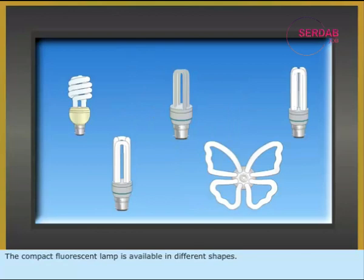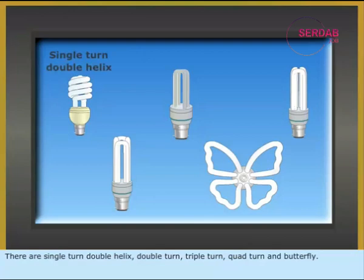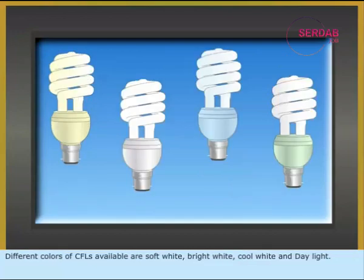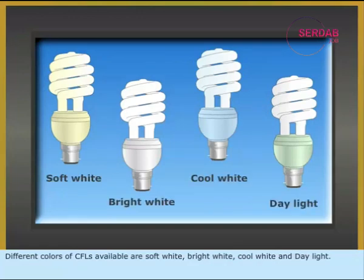The compact fluorescent lamp is available in different shapes. There are single turn double helix, double turn, triple turn, quad turn, and butterfly. Different colors of CFLs available are soft white, bright white, cool white, and K light.